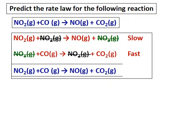That first step is the slow step. The NO₃, which is an intermediate product that does not appear in the final reaction, combines with carbon monoxide to give NO₂ and carbon dioxide. When we add up the two reactions, one NO₂ from the reactant side cancels with one NO₂ on the product side, and the intermediate NO₃ also gets cancelled, giving the overall equation: NO₂ + CO → NO + CO₂.